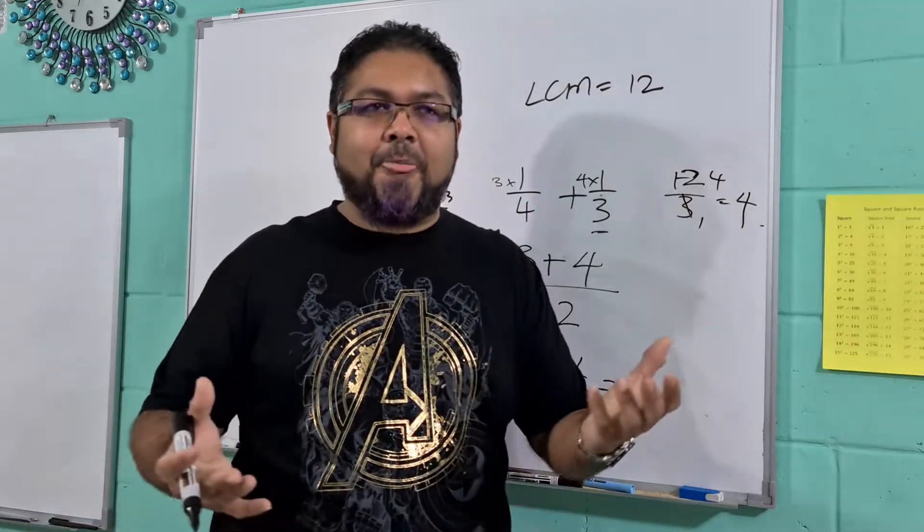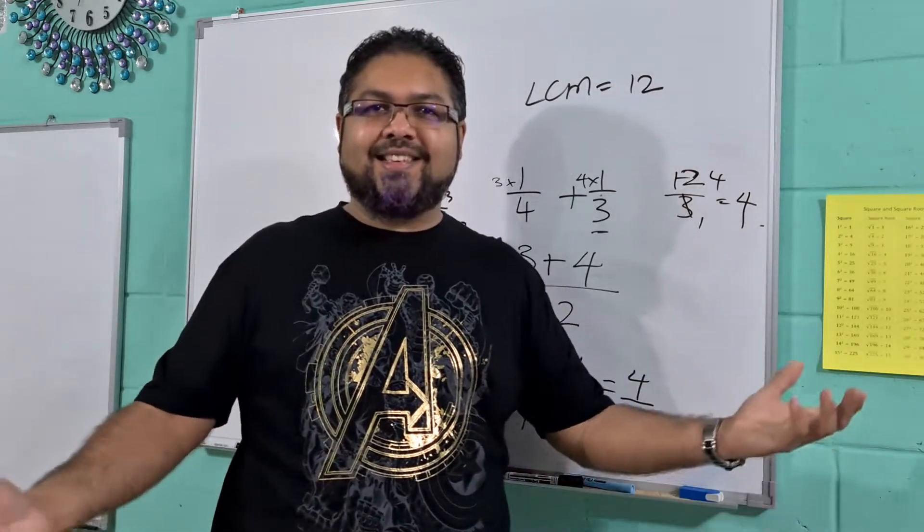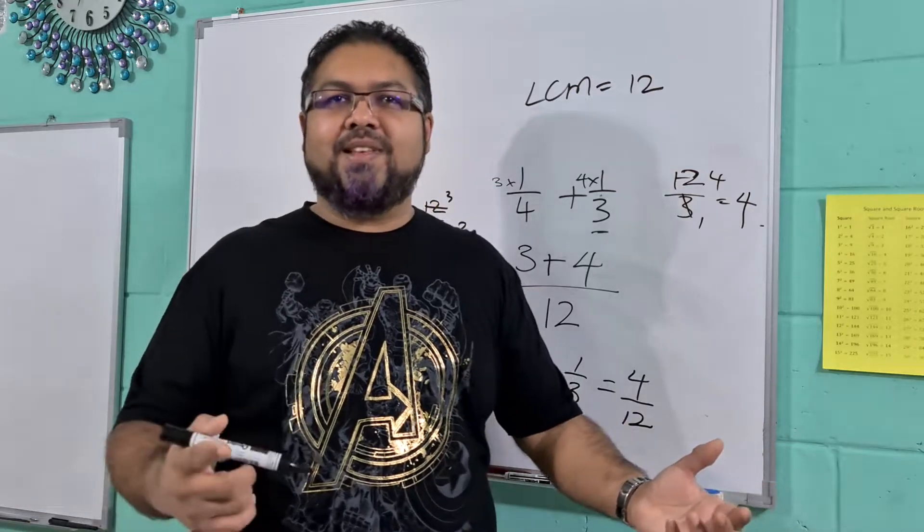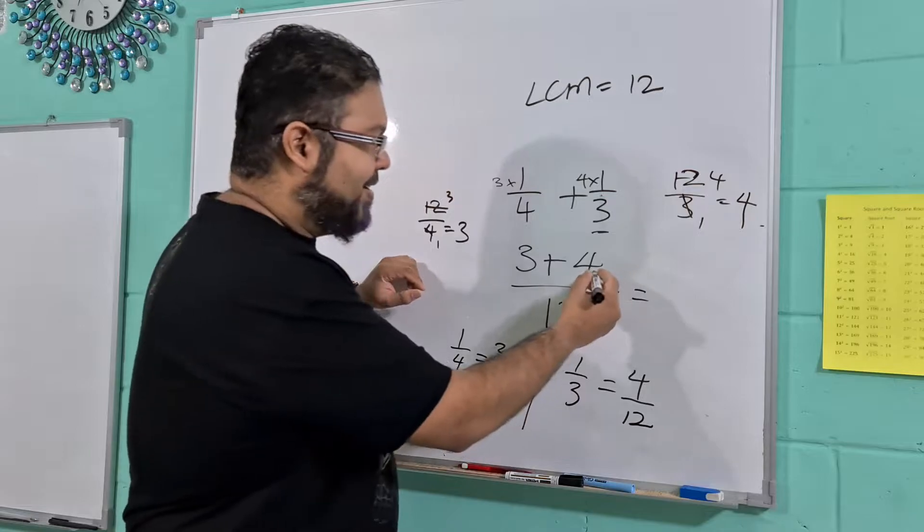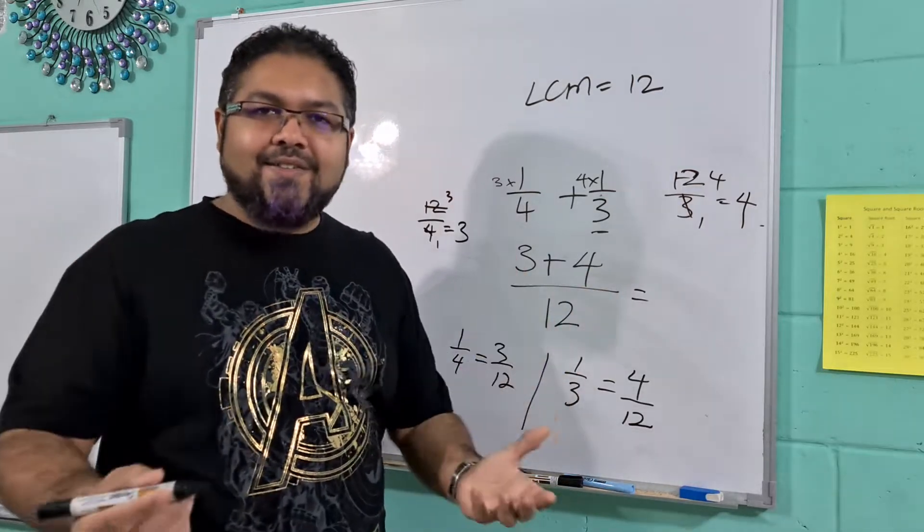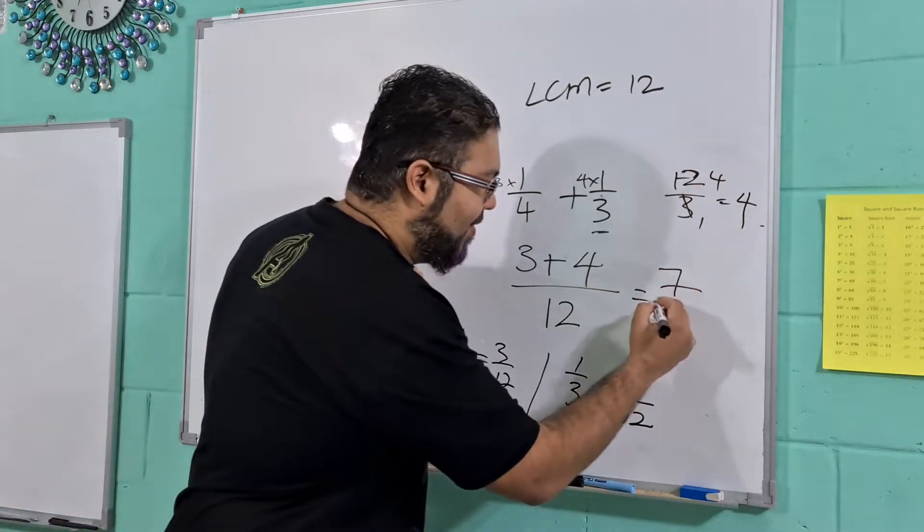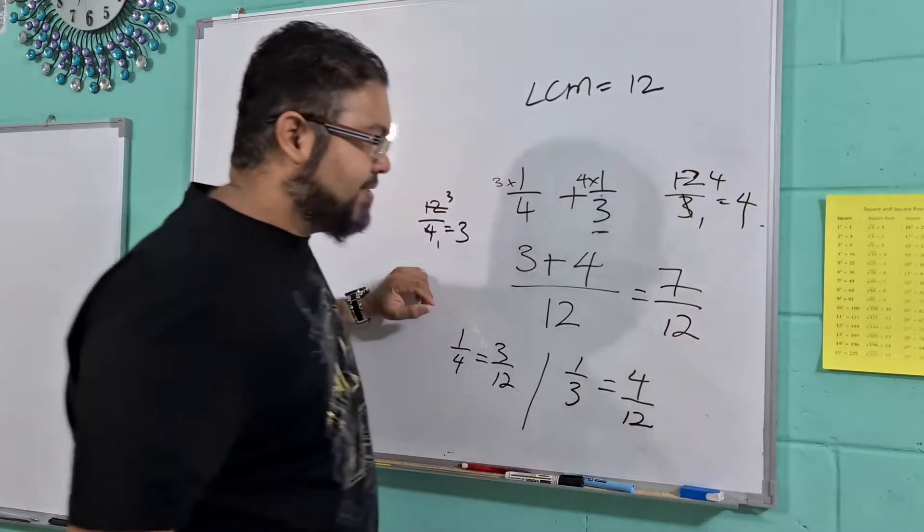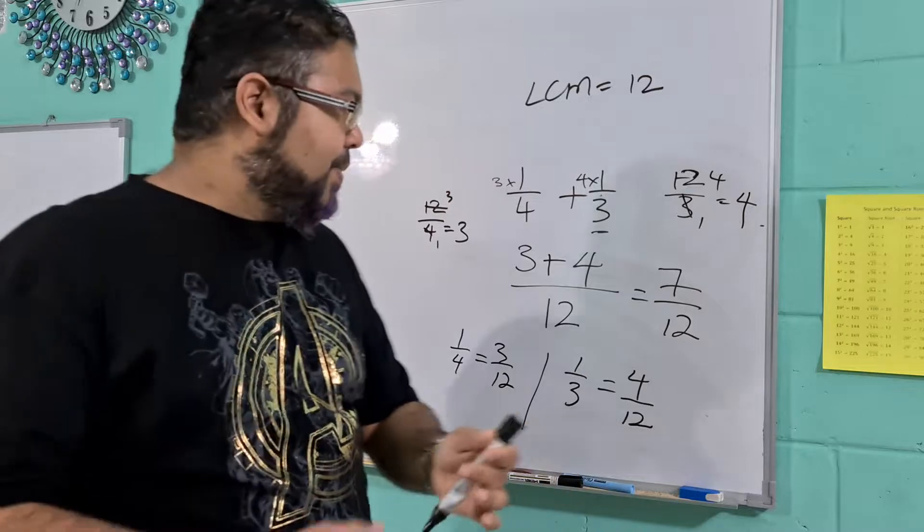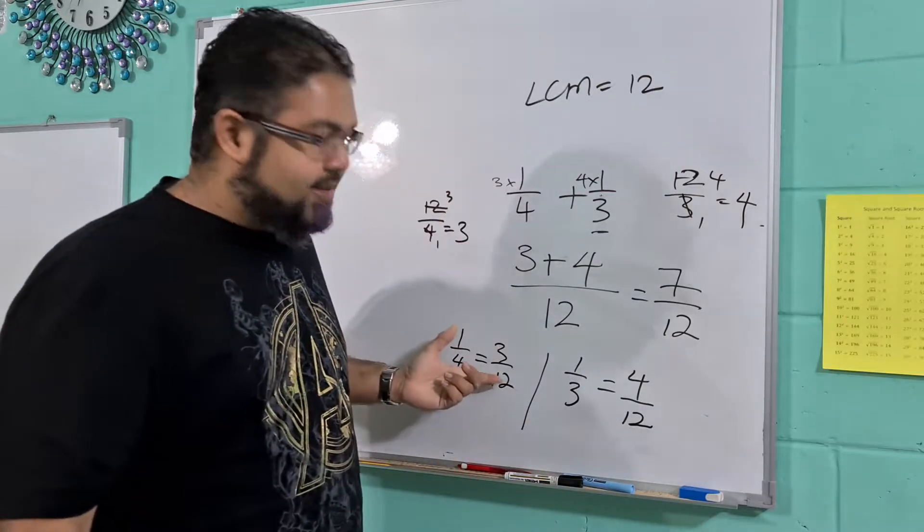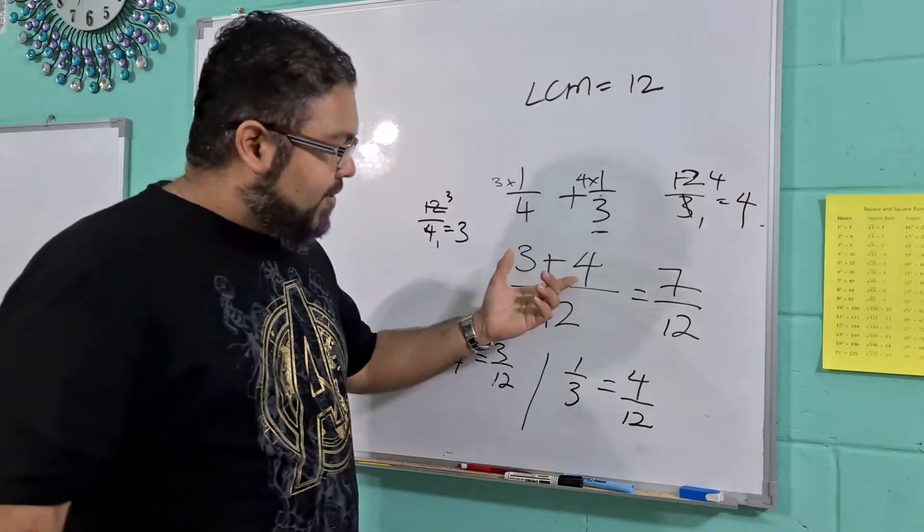Remember, once we have the denominators being the same, we just add the top numbers. Does it, that's eight minutes. I'll stop after this one. So all we do is 3 plus 4 is 7 over 12. We could actually represent it as pizzas as well. So we would have 3 slices out of 12.